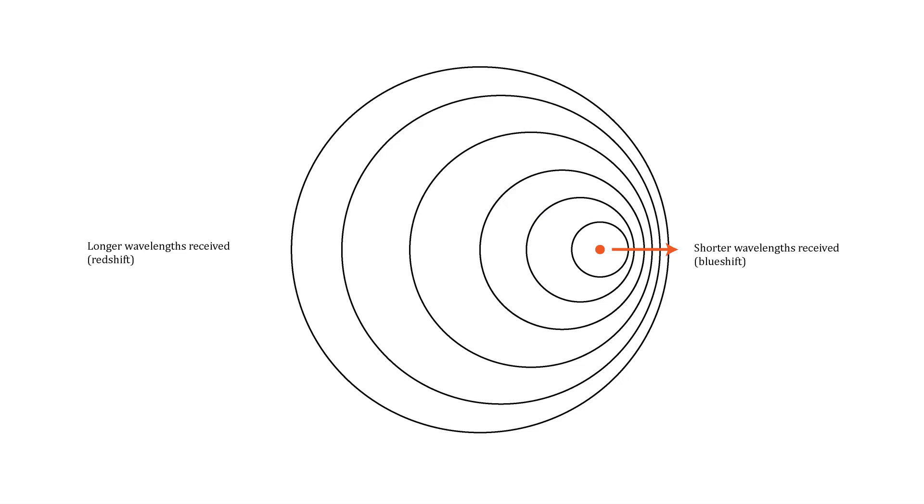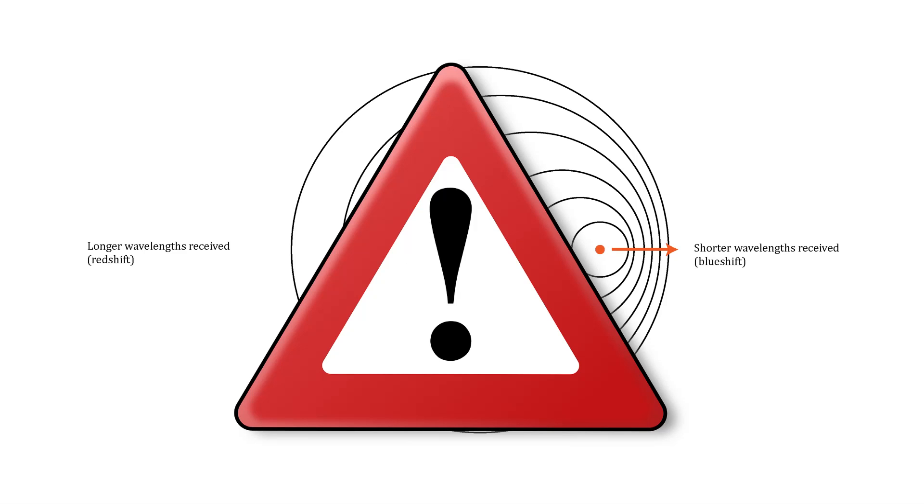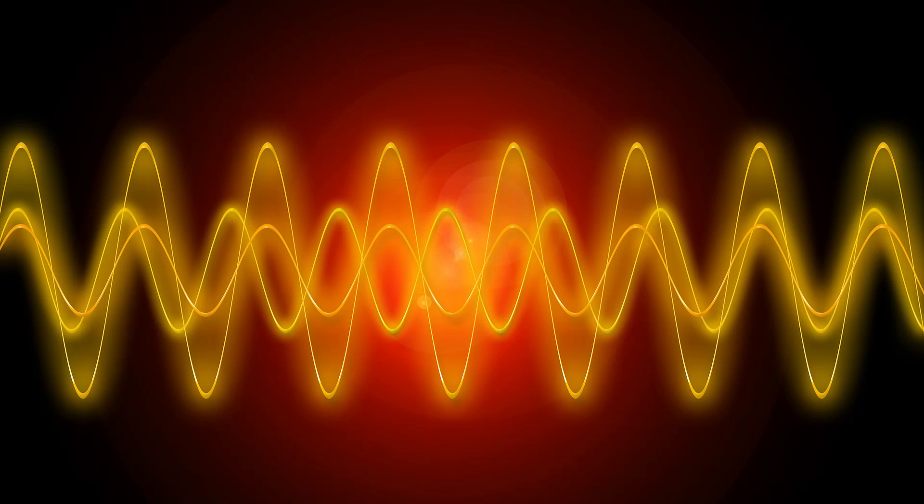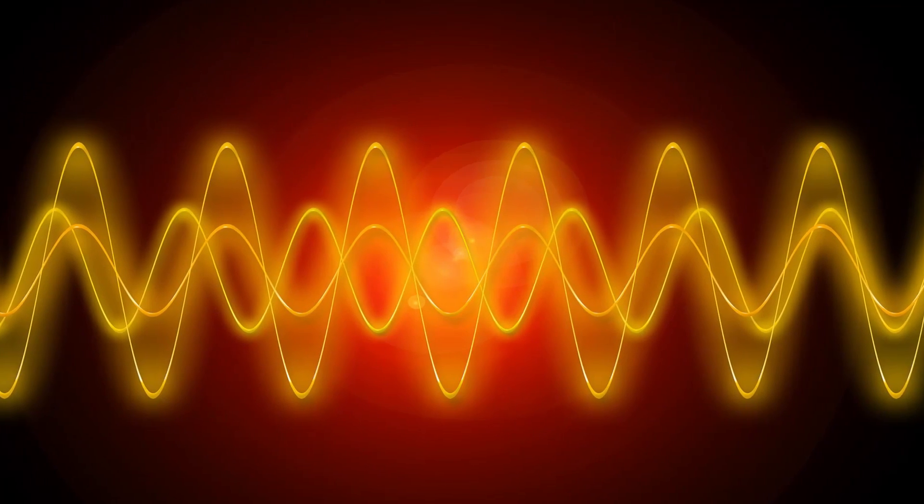This results in more distant galaxies being more redshifted. That is, the wavelength of light received from them is greater than that of the light emitted. This is not due to the Doppler effect as one might think, but to the expansion of space while the light from the galaxy is in transit. As light moves through expanding space, it too is drawn out. By the way,